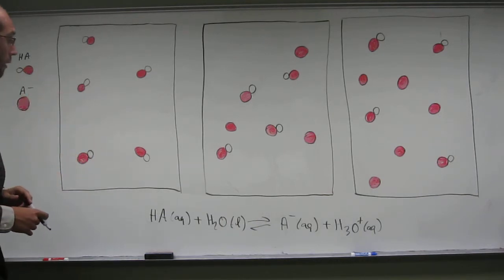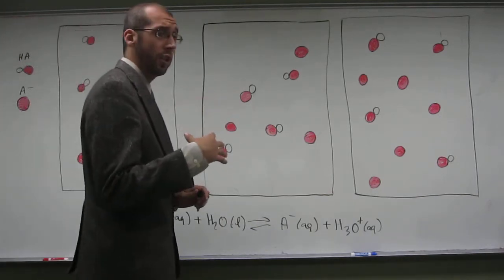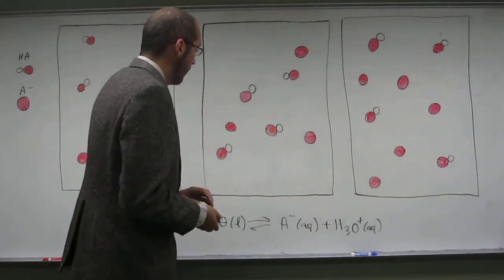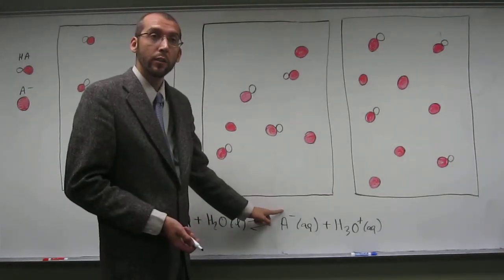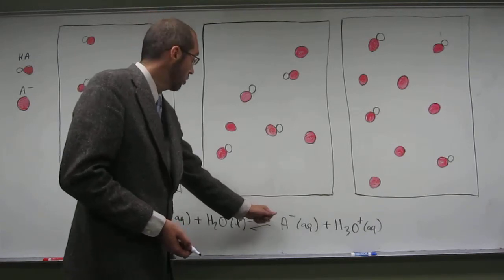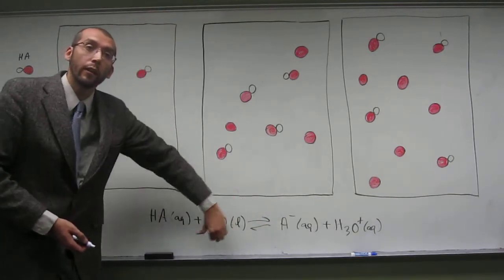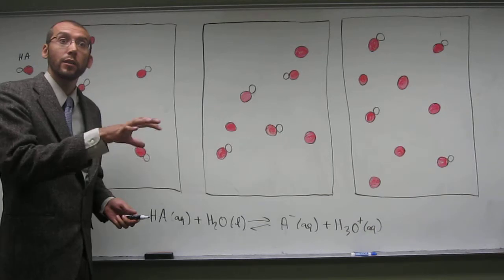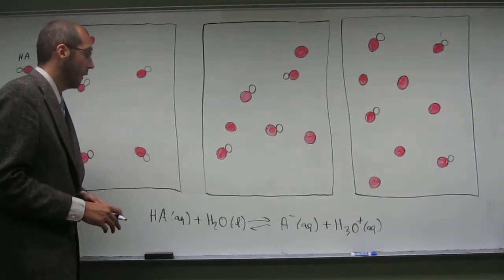Using Le Chatelier's principle, if we add A minus to a solution of HA, it should push the equilibrium backward and prevent dissociation. Does that make sense?